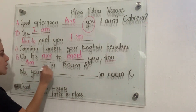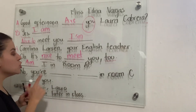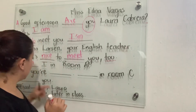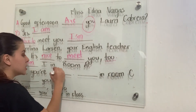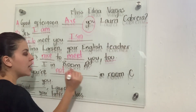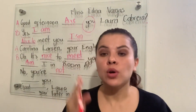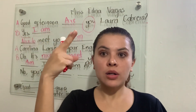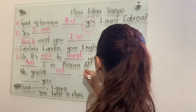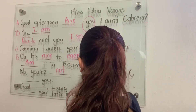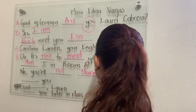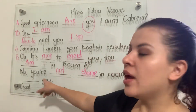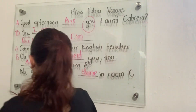'Am I in room A?' — this is a yes/no question. The answer is no: 'No, you are not.' I can use the contraction 'you are' → 'you're.' So the answer is: 'You're in room C.' Then the classmate will answer.